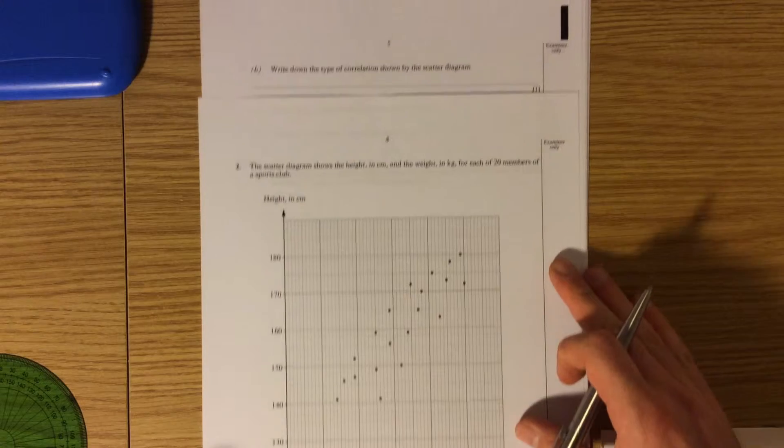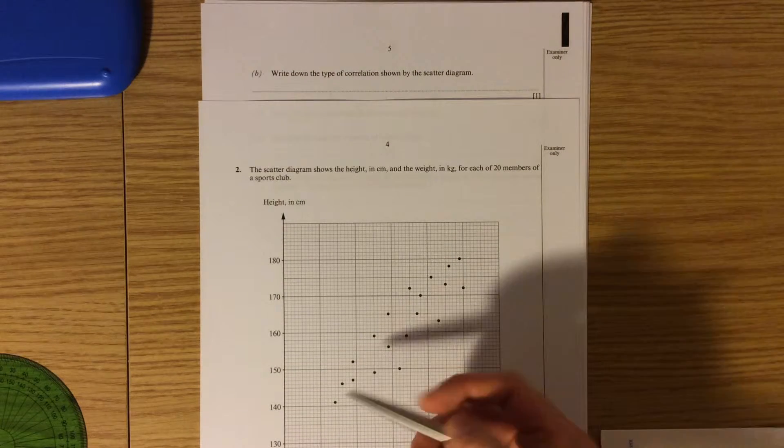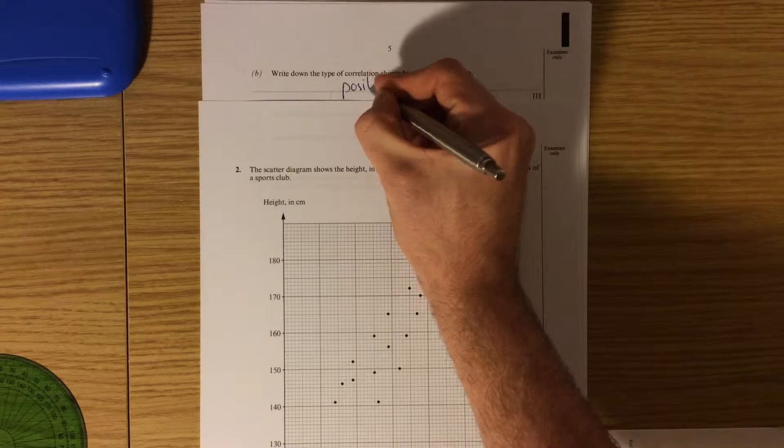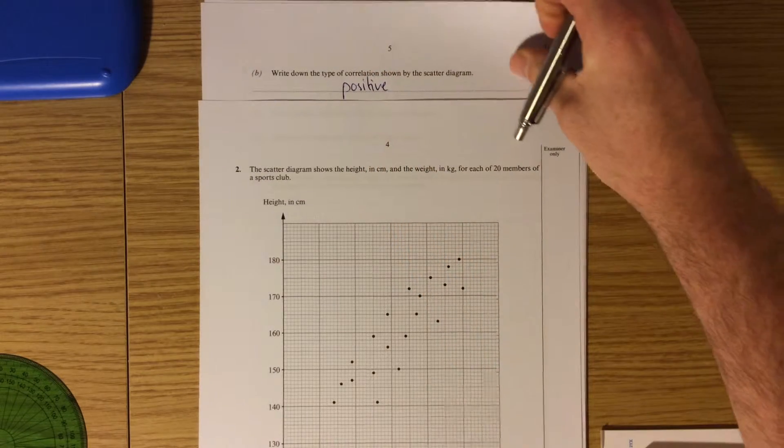Write down the type of correlation shown by the scatter diagram. All the points are going from the bottom left to the top right, so that represents a positive correlation within a scatter graph.